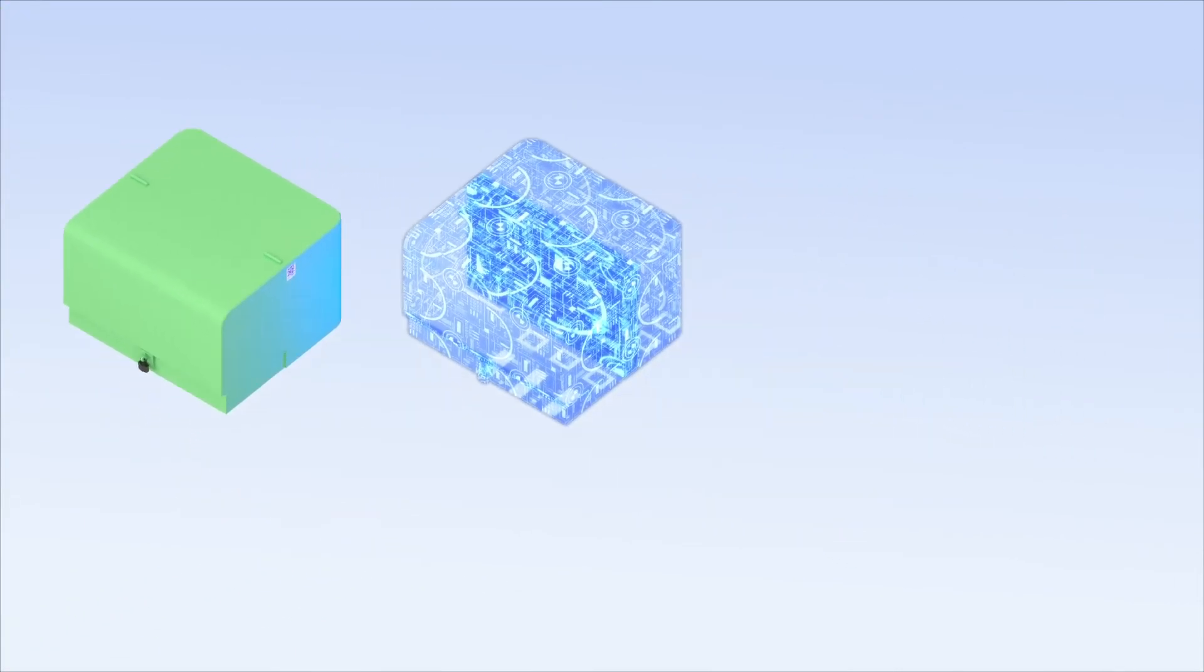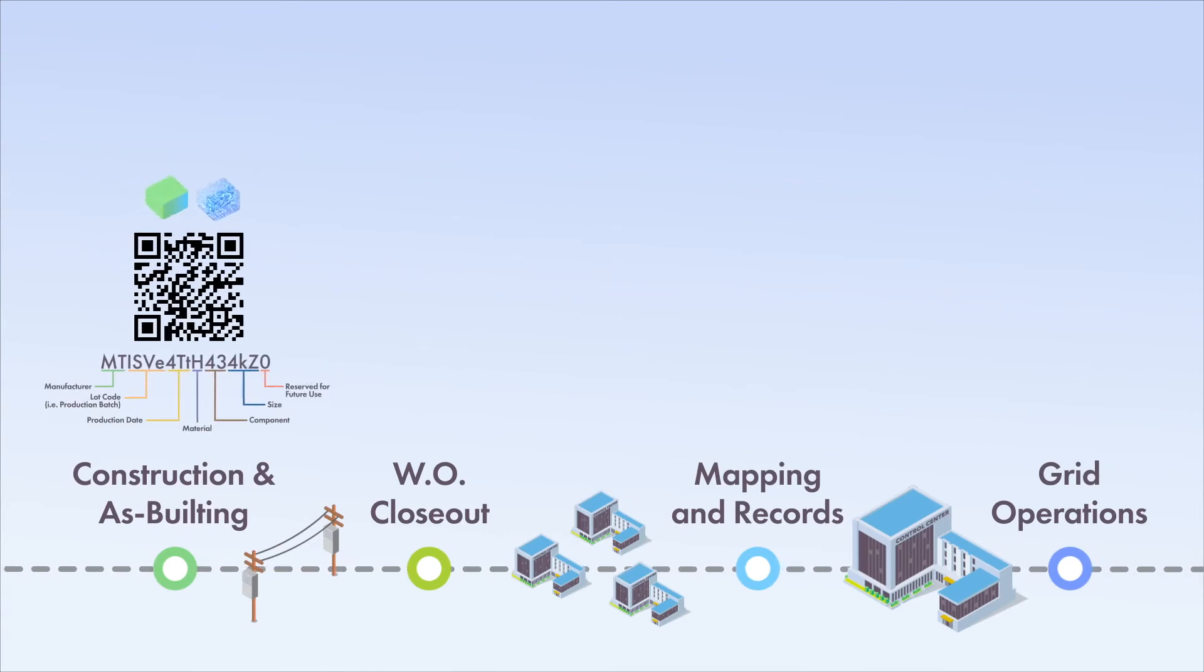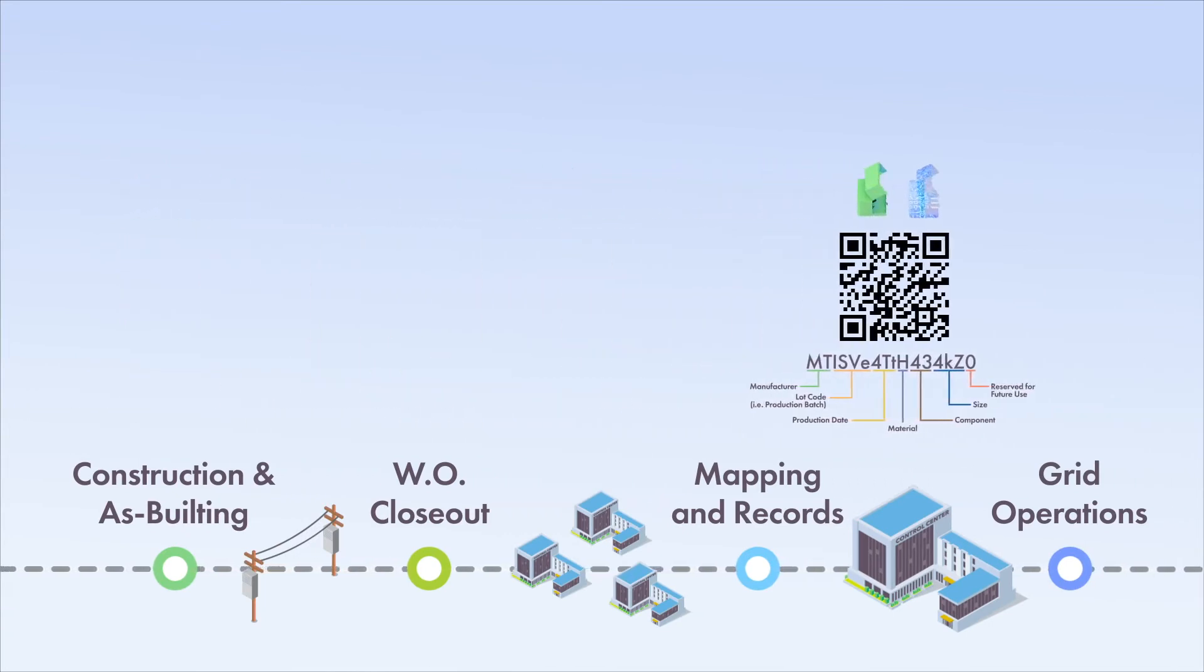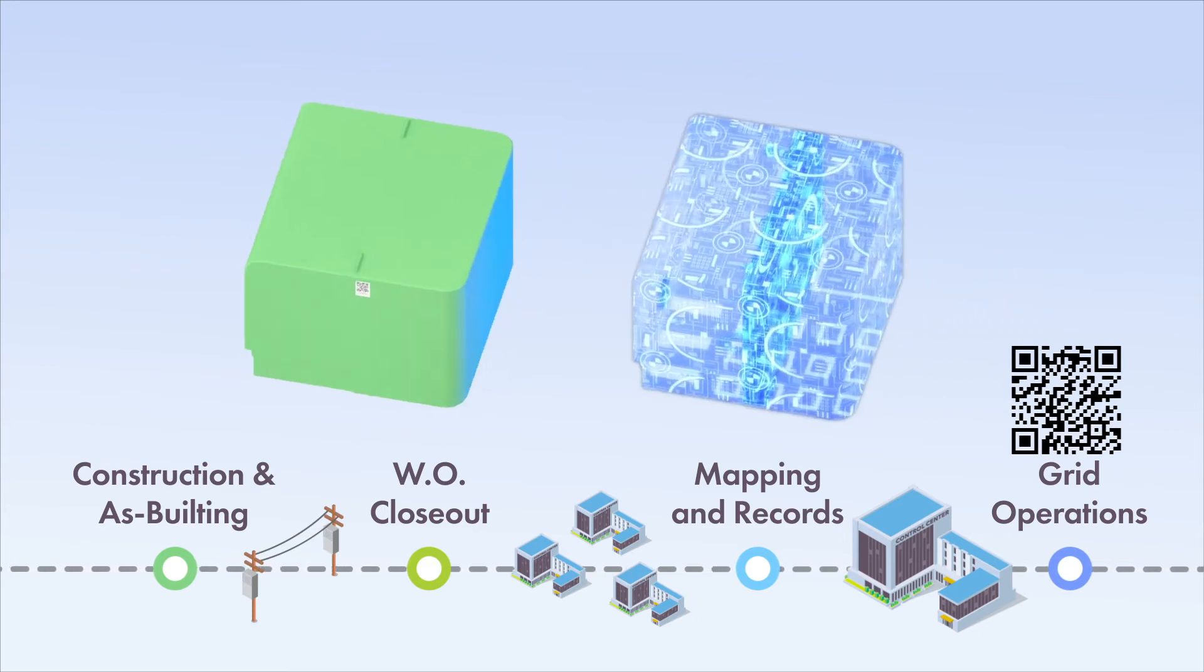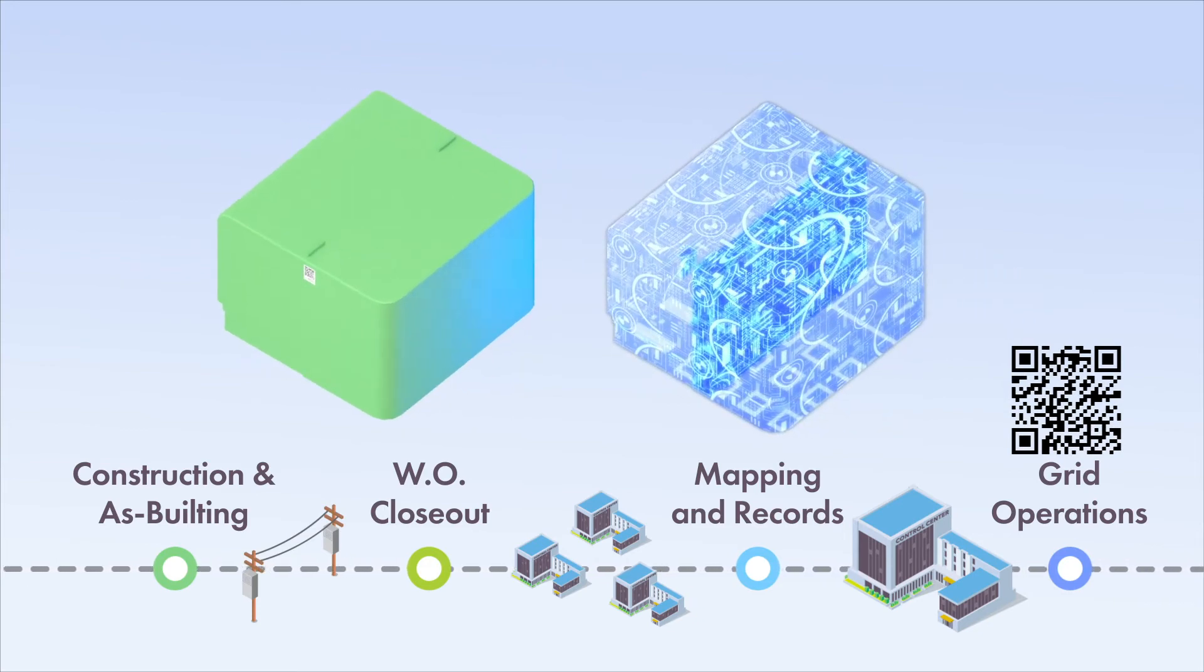Barcoding not only streamlines the capture of as-builts but also enables the creation of a digital thread necessary for digital twins of the electrical grid that grow and change over time, just as does the real electric grid.